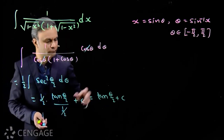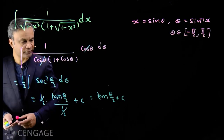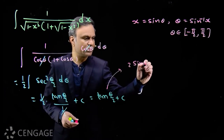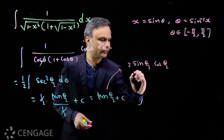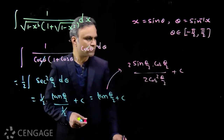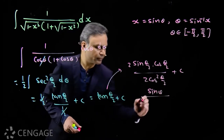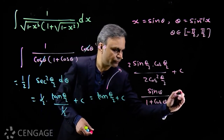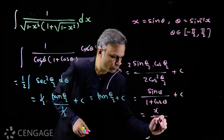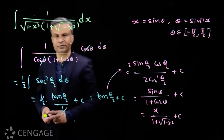Now we have to write the answer in terms of x. We can write tan(θ/2) = (2 sin(θ/2) cos(θ/2)) / (2cos²(θ/2)), which gives sinθ / (1 + cosθ). Now sinθ = x and cosθ = √(1 - x²). So the final answer is x / (1 + √(1 - x²)) + C.